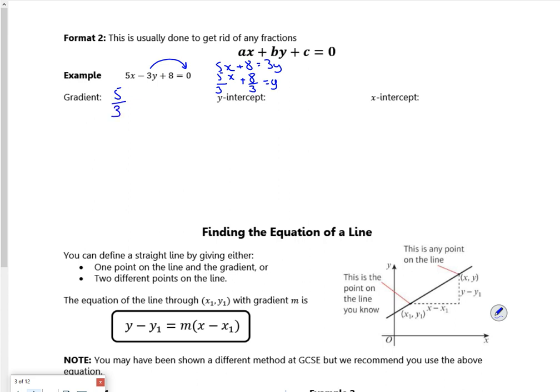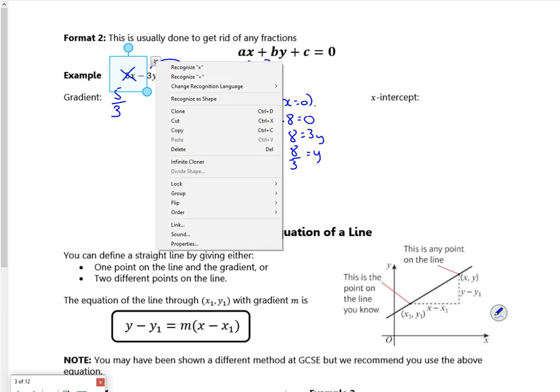For the y-intercept when x is 0, if I put x = 0 it disappears. I've got -3y + 8 = 0, so 8 = 3y, giving y = 8/3. I can do it that way.